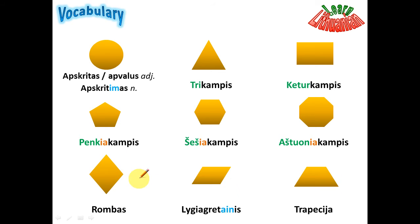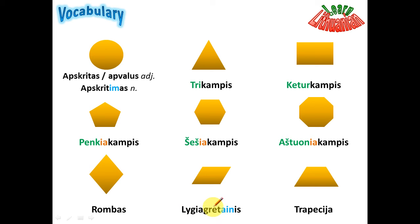These three other shapes are: rombas, lygiagretainis, and trapecija. You see 'lygiagretainis' uses the suffix '-ainis', just like in the word 'mėsainis' (hamburger) — made from 'mėsa' and suffix '-ain'. Similarly, 'lygia gretus' means parallel, and with the '-ainis' suffix you get 'lygiagretainis' — because the shape has two pairs of parallel sides.